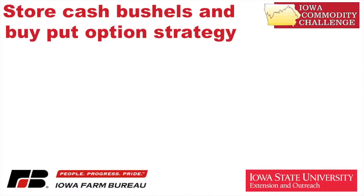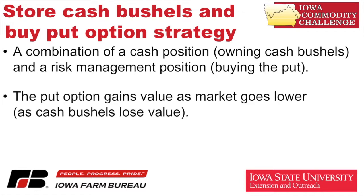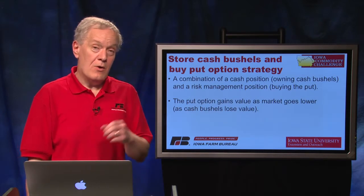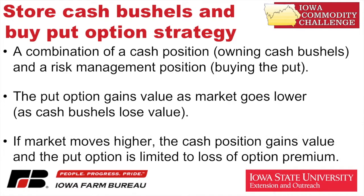Let's look at the strategy of storing those cash bushels and buying a put option against those cash bushels to manage downside price risk. It's really a combination — those cash bushels in the bin, or maybe in the field, and the put option to manage that downside price risk. The put option is going to gain value as the price goes lower. And remember, as the market goes lower, those cash bushels — whether in the bin or in the growing crop — are losing value. That's what we're trying to mitigate as far as risk.